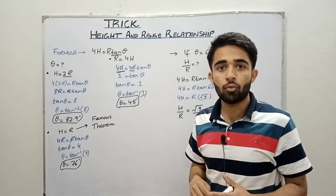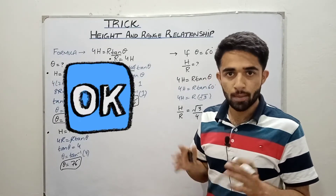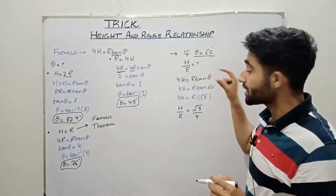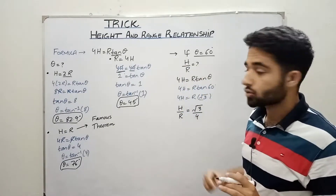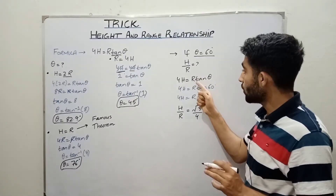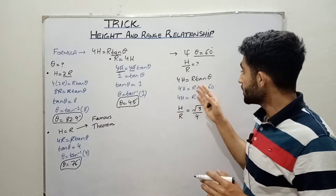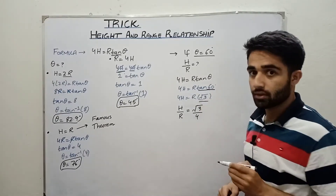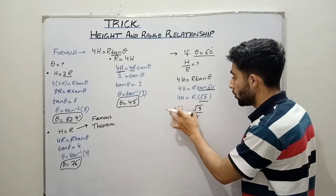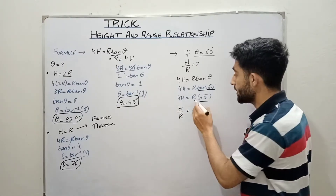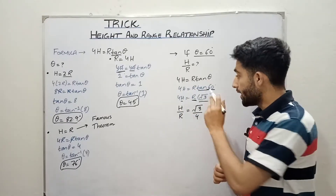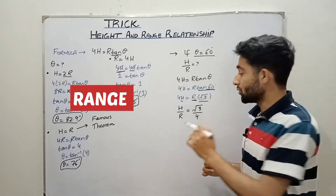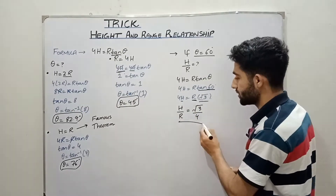All of these cases are very important for the exam. The next question: if θ = 60°, what is the ratio between height and range? Using 4H = R·tan(60°), and tan(60°) = √3, we get 4H = R·√3. Dividing both sides, the ratio height over range equals √3 over 4.